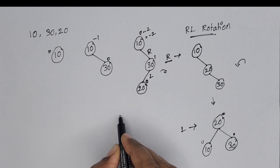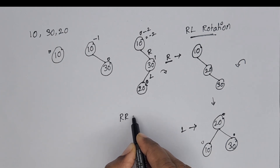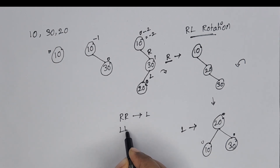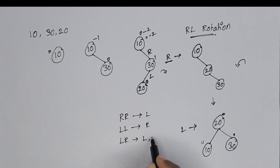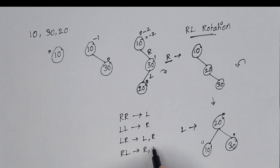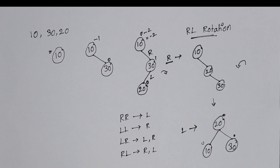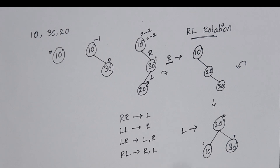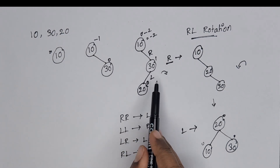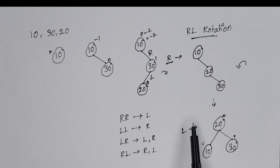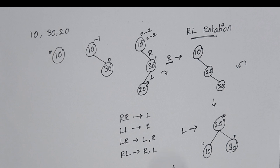So these are the four rotations: in RR rotation, perform a single left rotation; in LL rotation, perform a single right rotation; in LR rotation, first perform left rotation then right rotation; in RL rotation, first perform right rotation then left rotation. In the next video, we will see how to insert elements into an AVL tree. When inserting an element, you calculate the balance factor, and if unbalanced, balance the tree using these rotations. Thanks for watching. Bye.